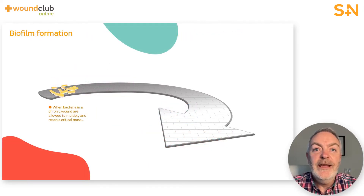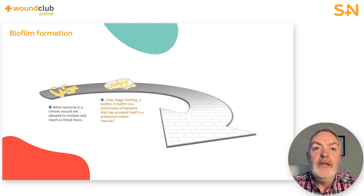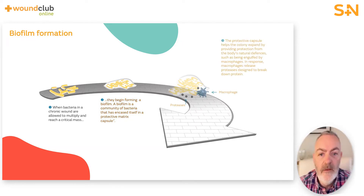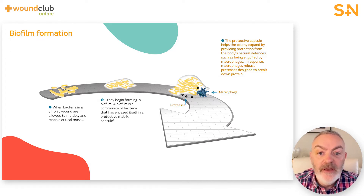When bacteria in and around chronic wounds are slowly allowed to multiply, they will ultimately reach a critical mass. They then begin forming a biofilm — a community of bacteria encasing themselves in a protective matrix capsule. This protective capsule expands and provides the microbes protection from your body's natural defences, defending them from being engulfed by macrophages and also protecting the biofilm on the wound bed from antibiotics.